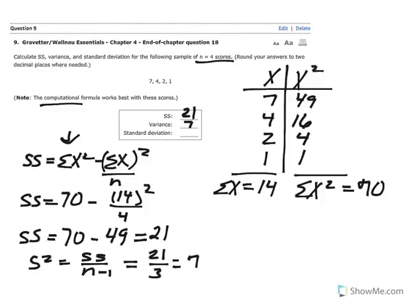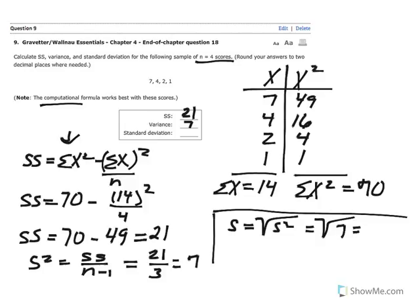And now, recognizing that that value is in squared units, we want to bring it back into its original units. So we're going to solve for standard deviation, and standard deviation is equal to the square root of our variance, which means we would take the square root of 7 and get a standard deviation equal to 2.645.